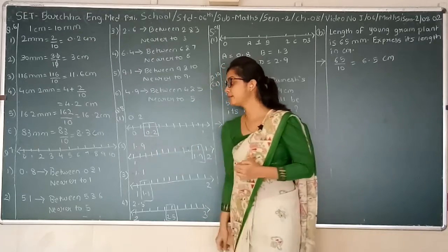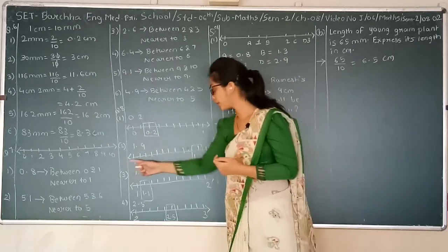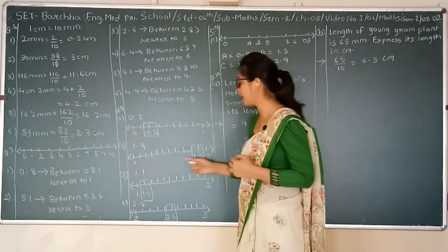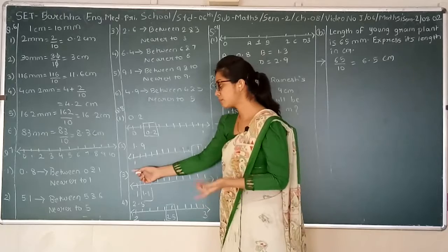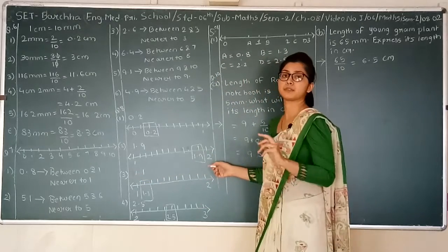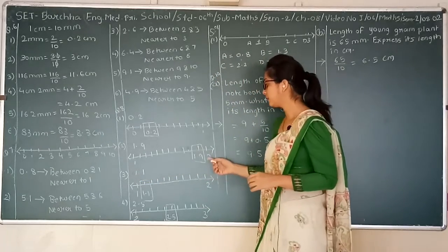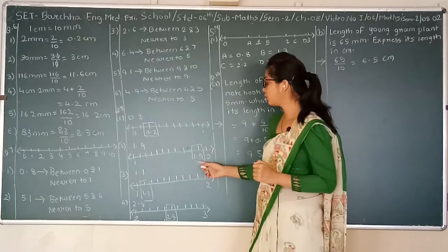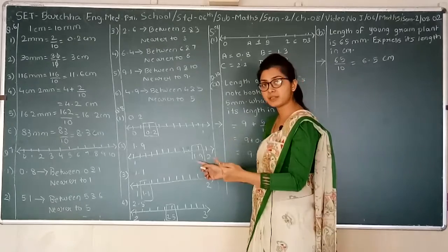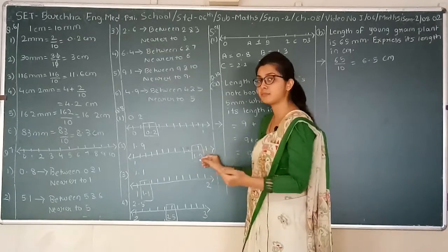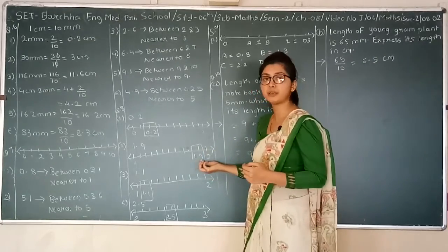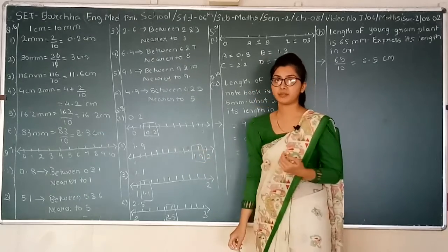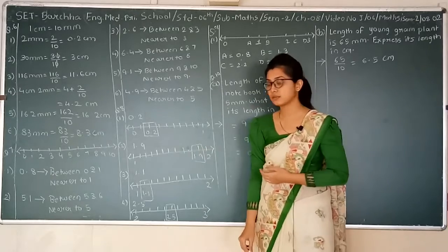Next one is 1.9. Draw a number line. Remember 1.9 will be in between 1 and 2, so the starting point must be 1. 1.9 will be just before 2, so at the previous highlighted mark you will write 1.9. Highlight it with a square or circle.